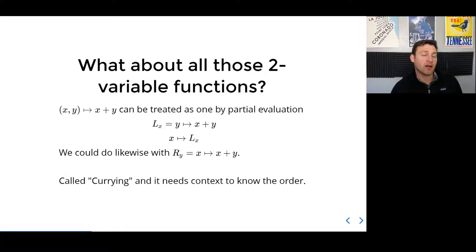For example, we can make an intermediate function called L sub X, which takes as input Y and outputs X plus Y. The variable X is delayed to a future function called X maps to L_X. This type of abstraction lets us deal with one variable at a time and get that precise notion before worrying about multiple variables.